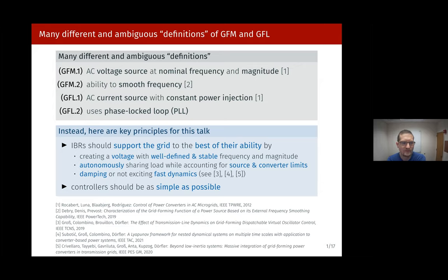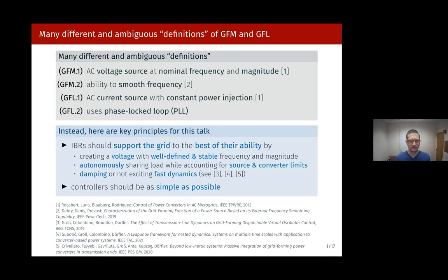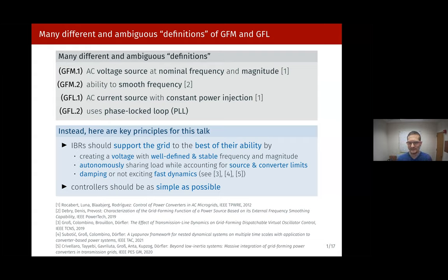To sidestep that issue, I would propose a slightly different perspective, similar to what Deepak Divan was discussing last week. Instead of asking whether something is grid forming or grid following, we should set principles for what we want from inverter-based resources. First, they should support the grid by creating a voltage with a well-defined, stable frequency and magnitude. They should autonomously share load while accounting for source and converter limits. And they should dampen or at least not excite fast dynamics.